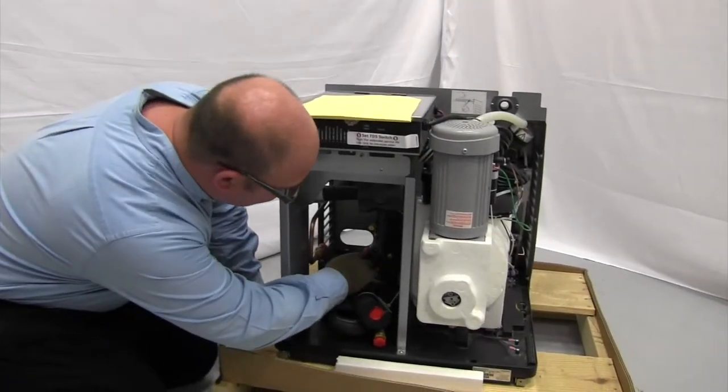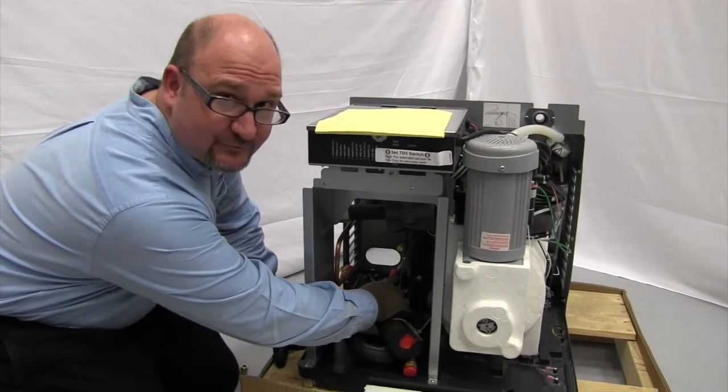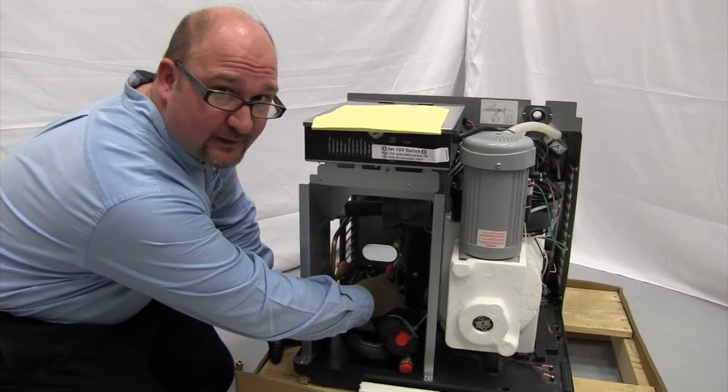The next thing we're going to do is we're going to check to make sure the refrigeration sight glass, that the indicator on the inside is green. If it's yellow, you want to contact Follett.